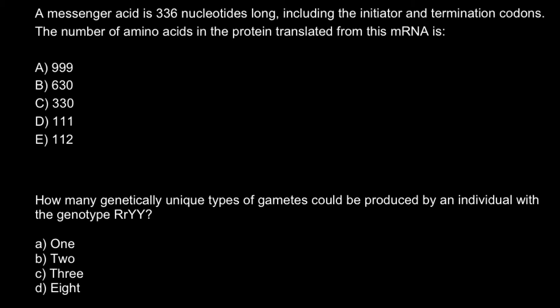Here is the first question: a messenger RNA is 336 nucleotides long, including the initiator and termination codons. The number of amino acids in the protein translated from this mRNA is — and you have to choose between these five answers.